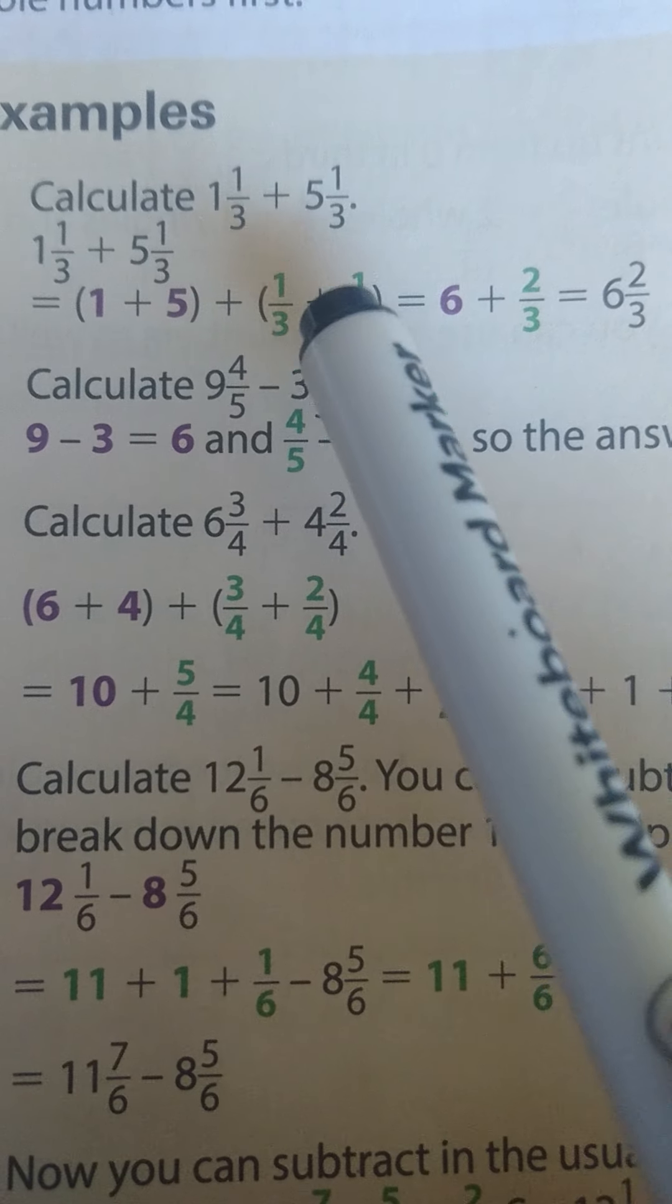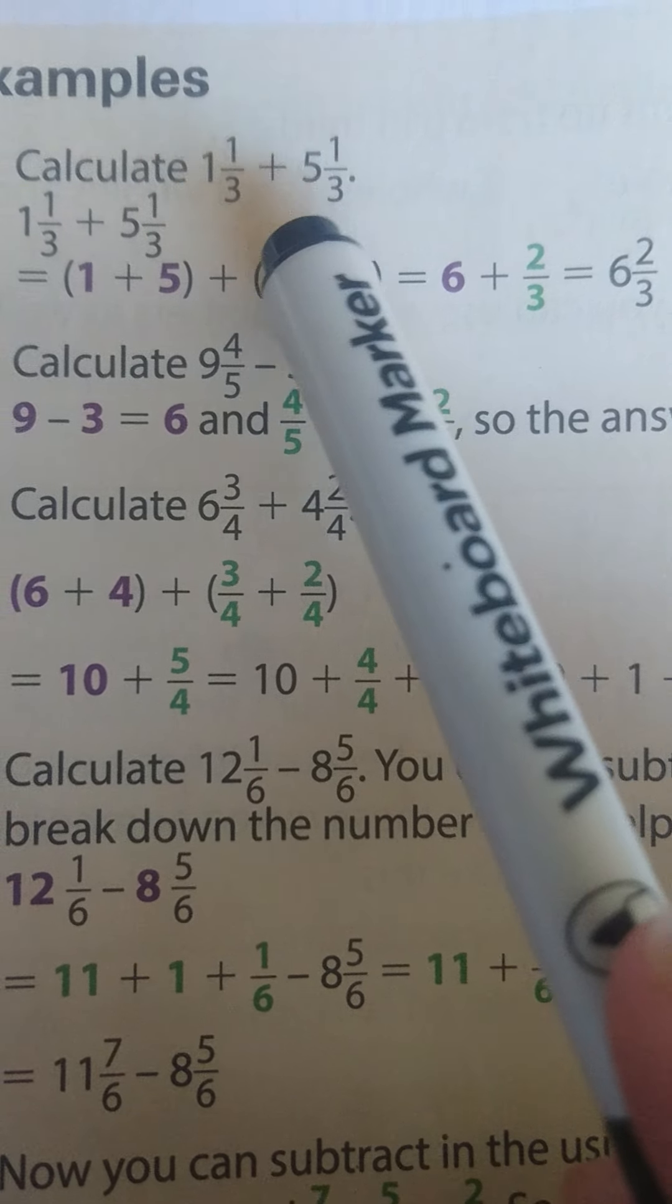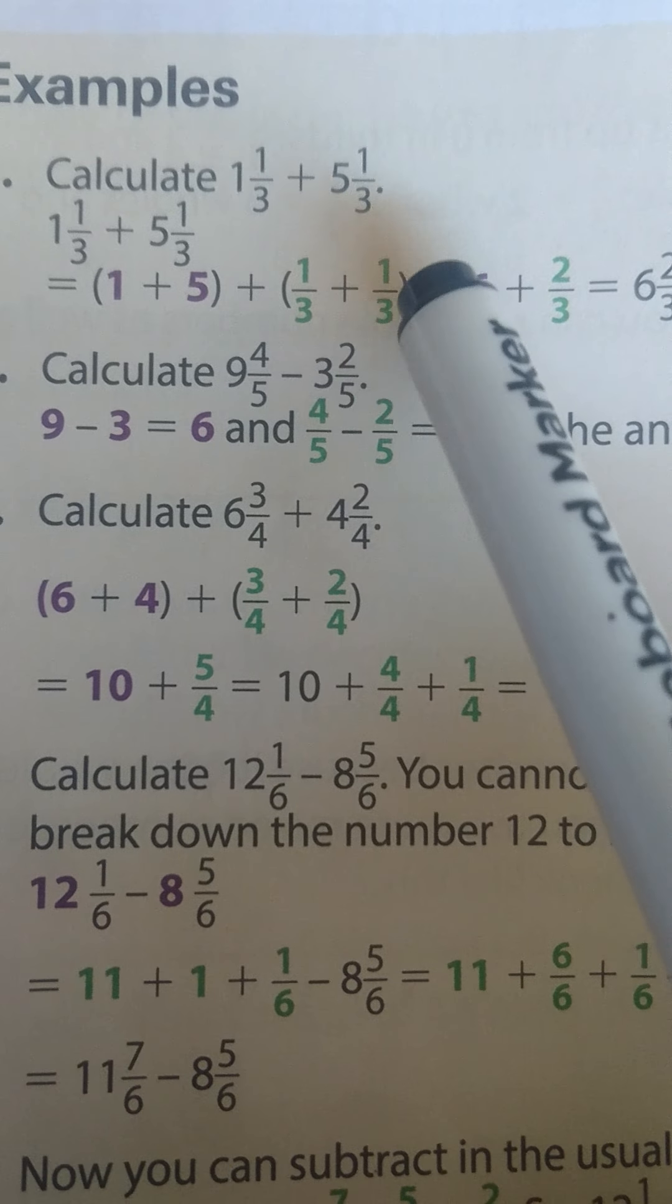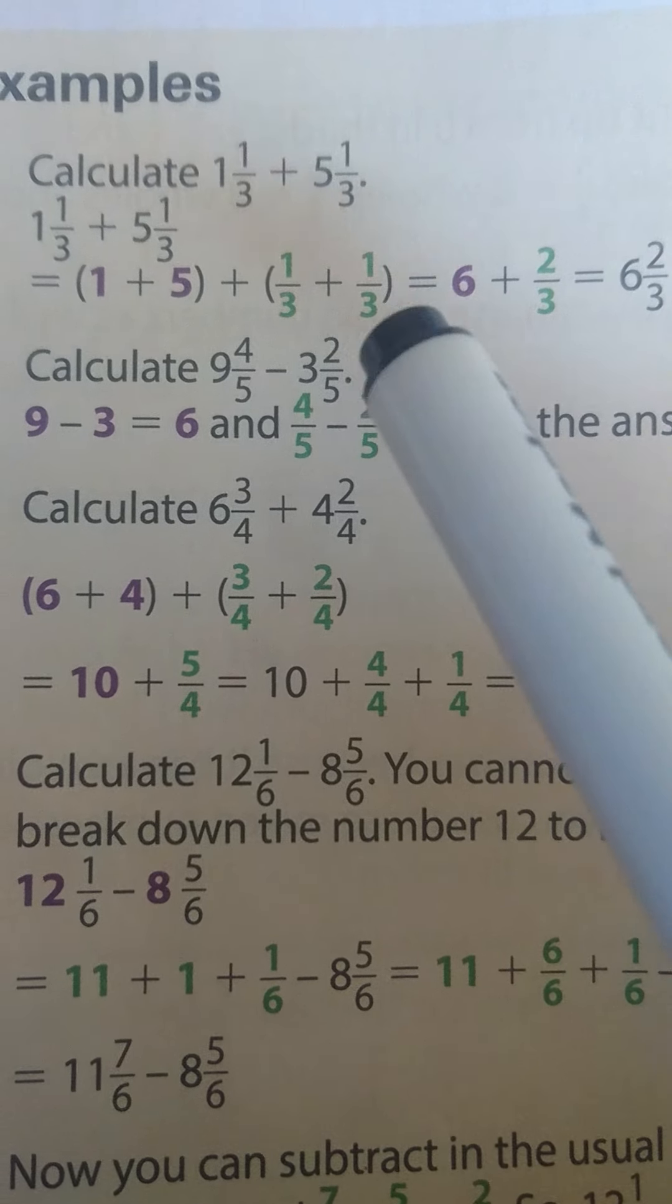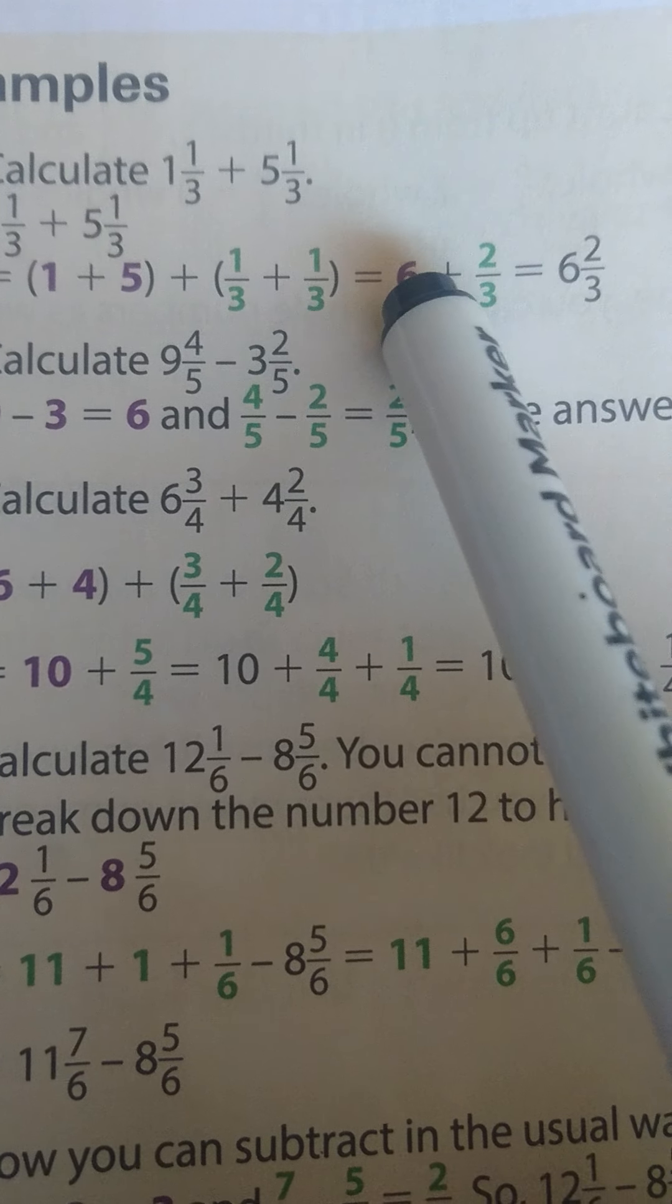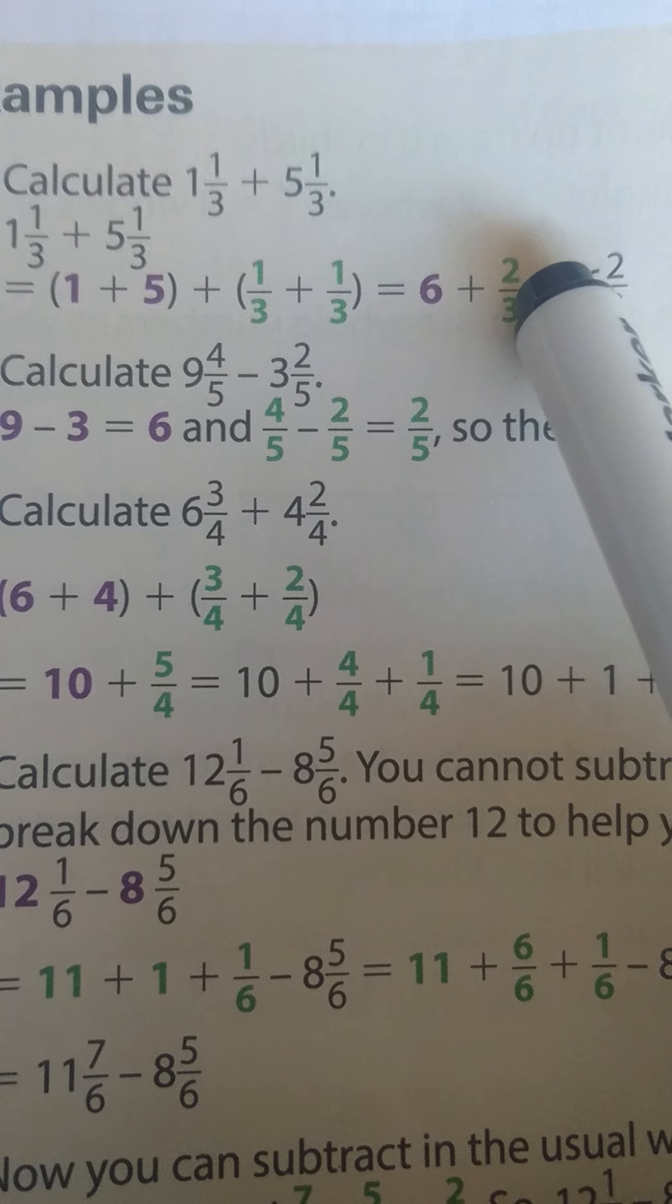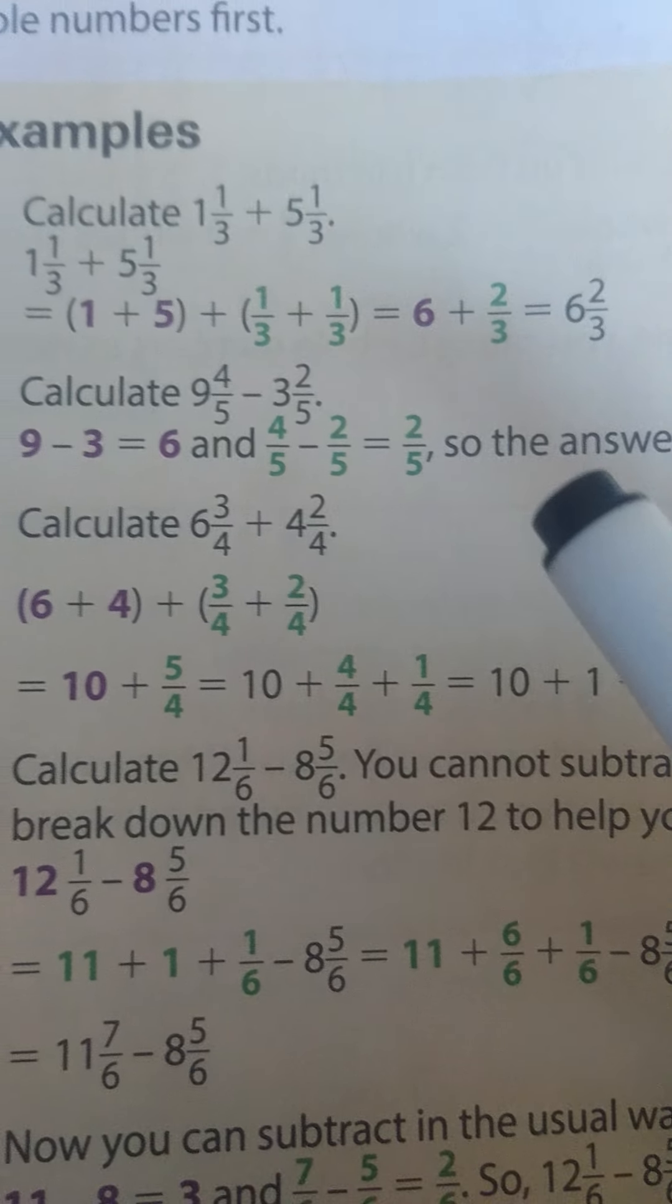Same thing goes for the fraction. Then we say plus, open brackets, ⅓ + ⅓. Now you already did fraction calculations so you should already know what the answer for this is. So 1 + 5 = 6 and ⅓ + ⅓ = ⅔. And therefore our answer is 6⅔.